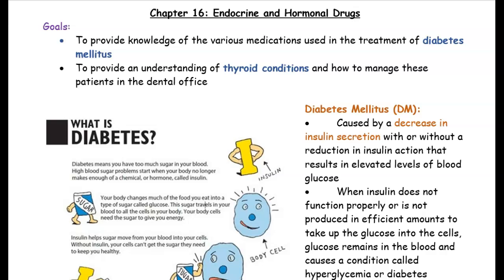In this chapter, we're going to look at diabetes and we're also going to look at thyroid. So let's start with diabetes. Diabetes is also known as diabetes mellitus, also known as DM. And what diabetes is, it's basically a sugar disease.